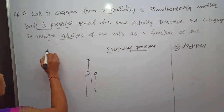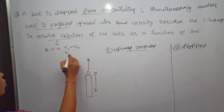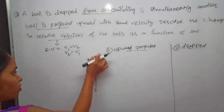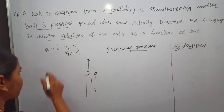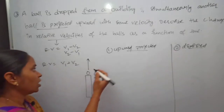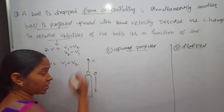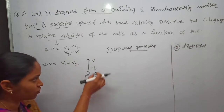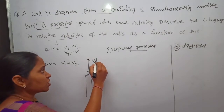The formula for relative velocity is v1 minus v2, or v2 minus v1. In case of oppositely moving bodies, the relative velocity will be equal to v1 plus v2. Ball one is moving in the upward direction, so its velocity is upward, and the acceleration is in the downward direction because of gravity. Therefore the velocity gradually decreases.